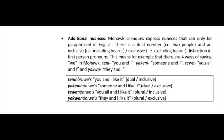Mohawk pronouns express nuances that can only be paraphrased in English. There is a dual number for two people, and an inclusive-exclusive distinction in first-person pronouns — inclusive pronouns include the hearer, whereas exclusive pronouns don't. This means there are four ways of saying 'we' in Mohawk: 'rini' (you and I), 'yaguni' (someone and I), 'rewa' (you all and I), and 'yaqwa' (they and I).